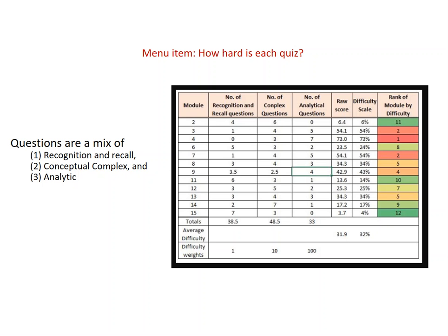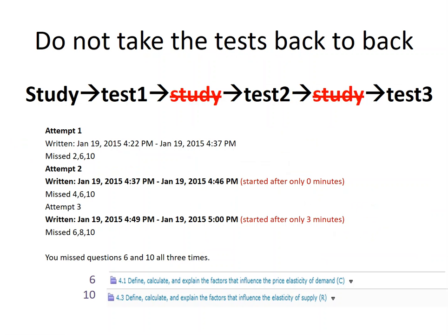Why is module 7 also so tough? That's the theory of the firm, and it deals with cost structures. Every student I've ever had has a problem with cost structures — it's just a slightly different way of thinking.